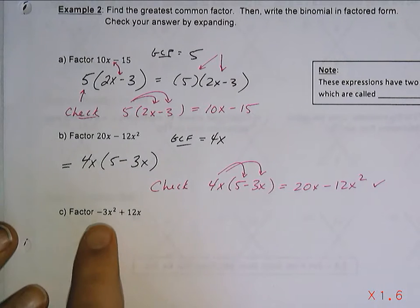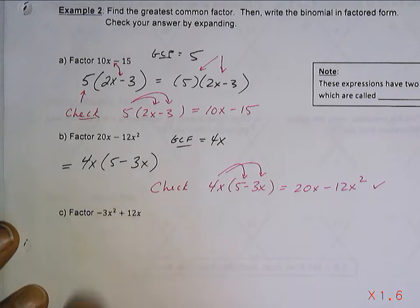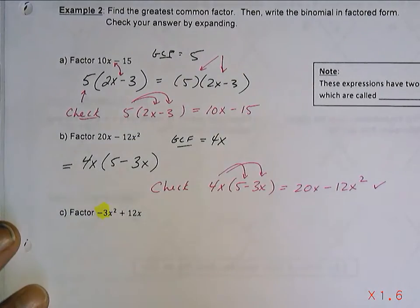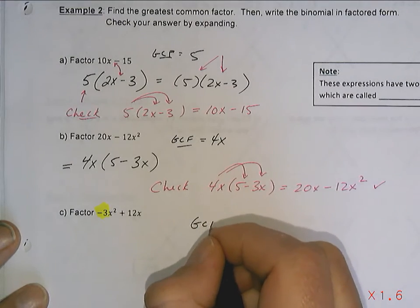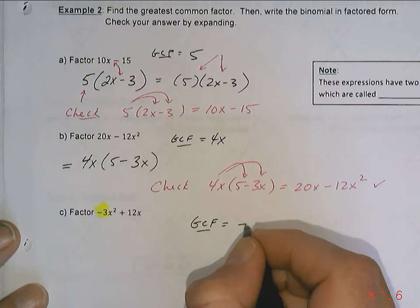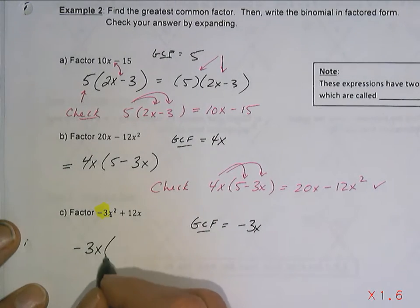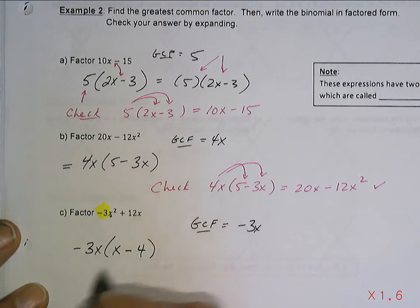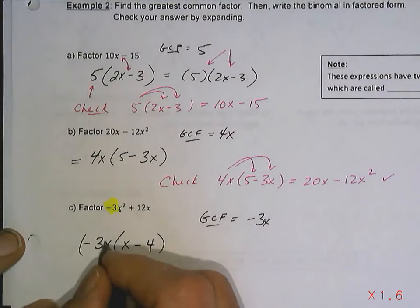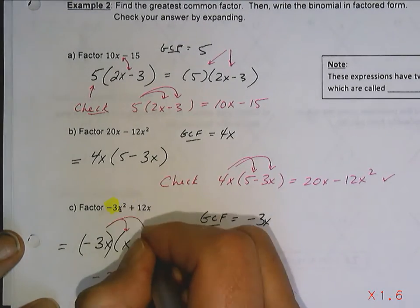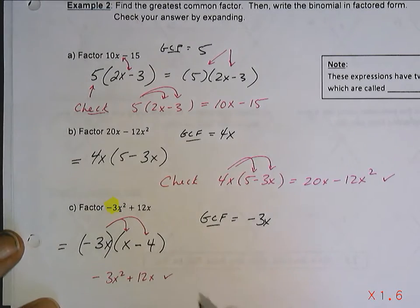Example 2c: negative 3x² plus 12x. When the first term is negative, we tend to factor out a negative as well. The GCF is negative 3x — factoring that out leaves negative 3x times open bracket x minus 4. Expanding to check: negative 3x times x = negative 3x², and negative 3x times negative 4 = positive 12x. That's what we started with, so it's correct.